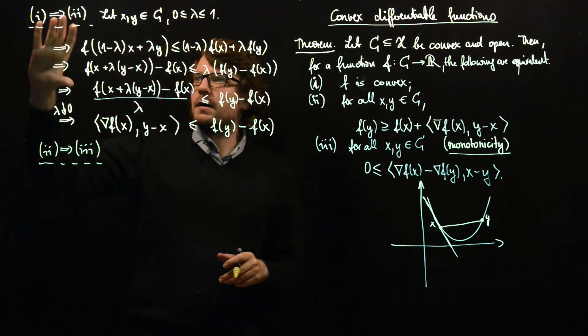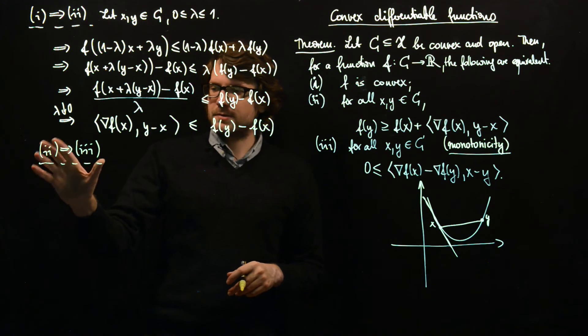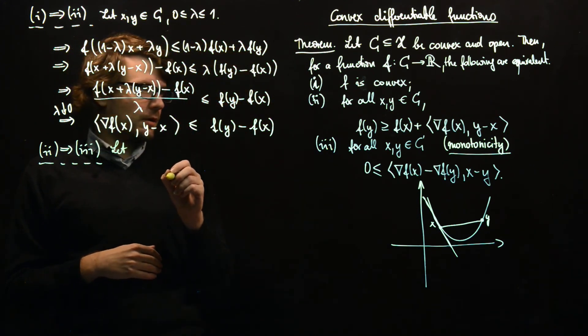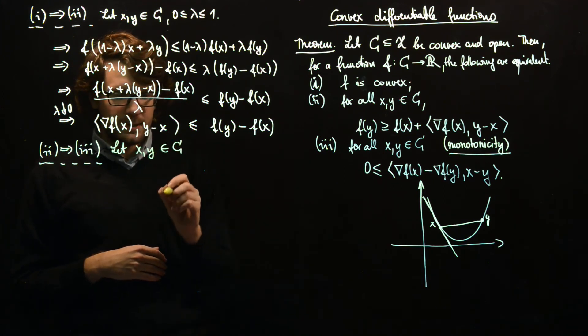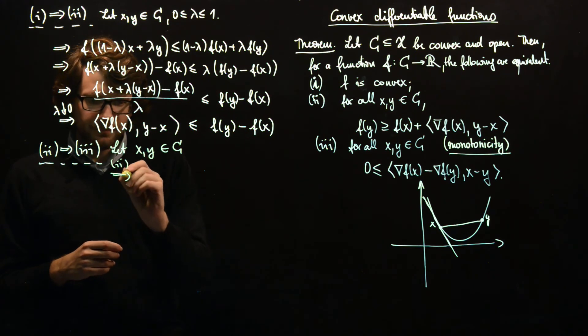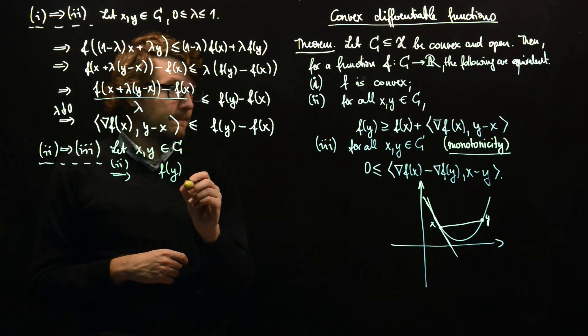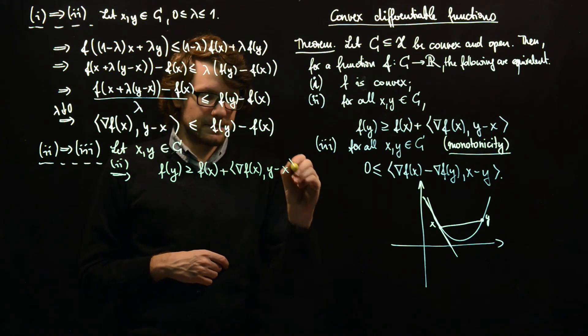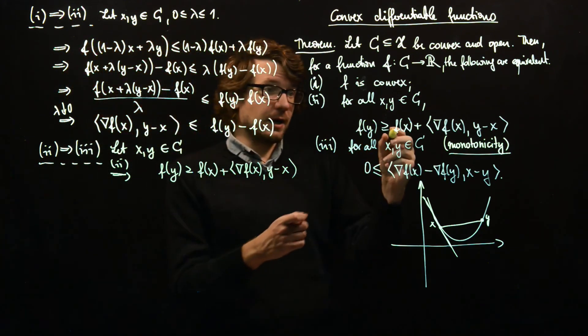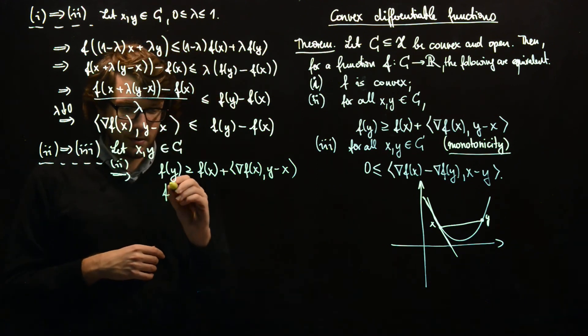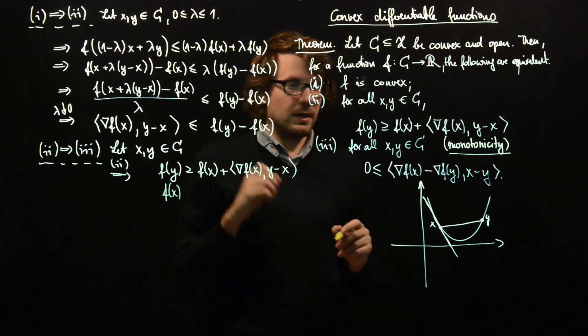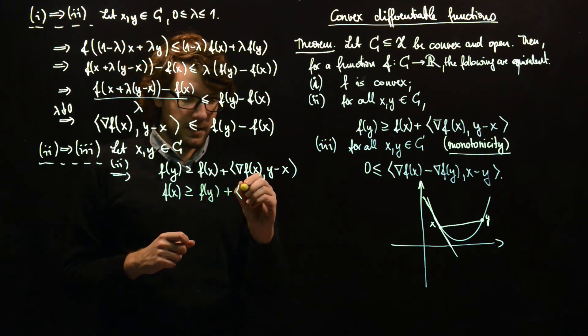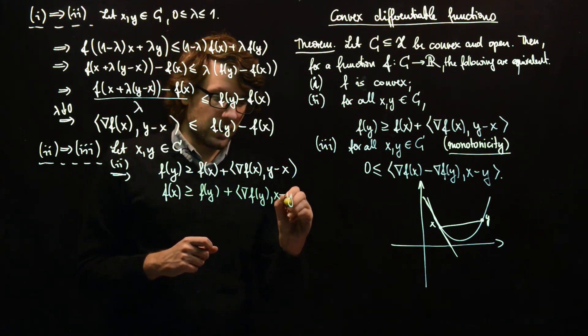Let's briefly prove that we can go from point 2 to point 3. So let X and Y be points in C. Then by 2 we have F(Y) ≥ F(X) + ∇F(X)·(Y - X). And now whenever we change X and Y the same thing must hold because property 2 says that this holds for all X and Y in C. So we have F(X) ≥ F(Y) + ∇F(Y)·(X - Y).